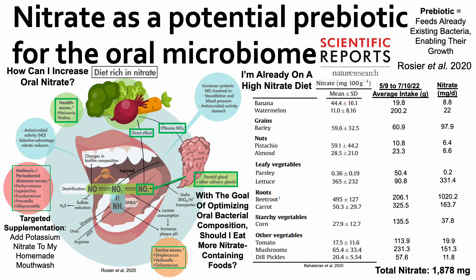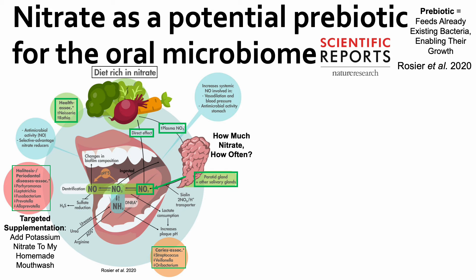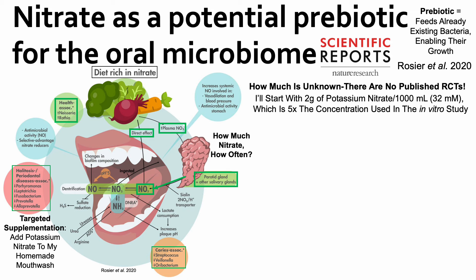I generally don't supplement, but this is a case for targeted supplementation. I plan to add potassium nitrate to the mouthwash. There are no published randomized controlled trials using a specific nitrate amount to optimize the salivary microbiome. I'll start with 2 grams of potassium nitrate per 1,000 milliliters — a 32 millimolar concentration, five times the in vitro study concentration. I can titrate up or down based on future microbiome test results.